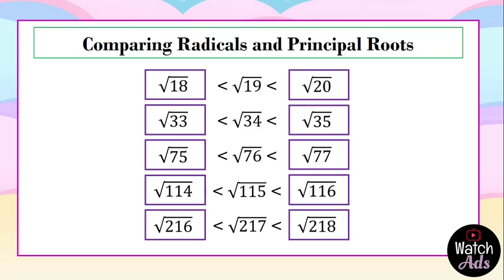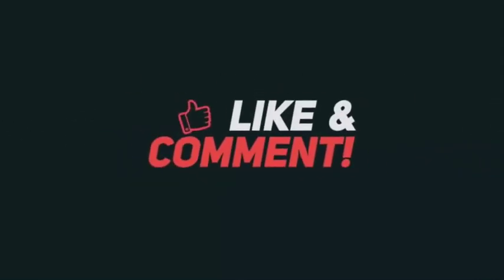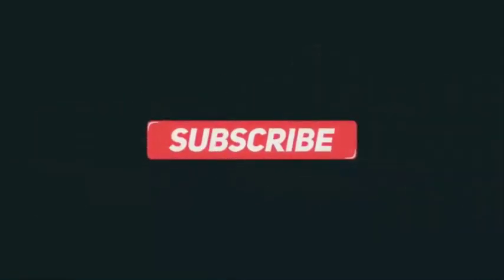That ends our lesson today about determining which two consecutive integers the square root of a number lies between — essentially estimating, since it's hard to compute the decimal part of irrational square roots. The same applies to comparing radicals. I hope you have understood this lesson fully and clearly. If you have any questions or suggestions, comment below. Stay tuned because I will be uploading more free math tutorials. Thank you for watching — we'll see you next time.